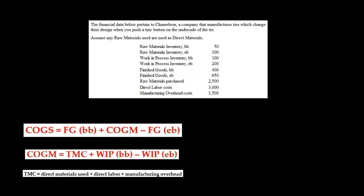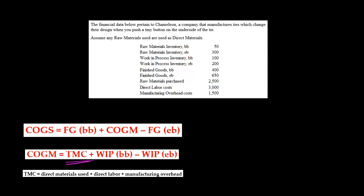What's the total manufacturing cost? That's direct materials used, direct labor, and overhead. We have two of these three things here: direct labor is $3,000 and manufacturing overhead is $1,500. So we're going to start with $3,000 plus $1,500 — those are those two amounts — but we still need to add the direct materials used.